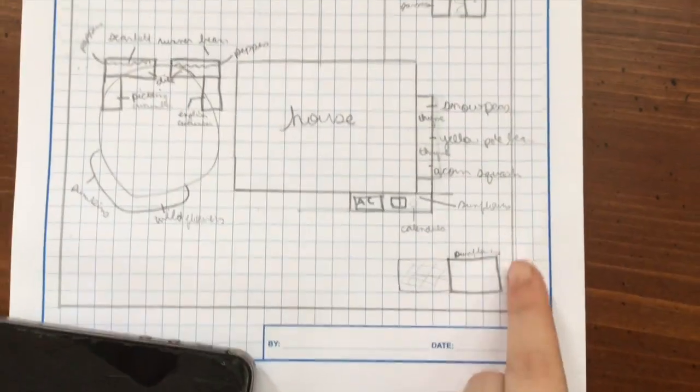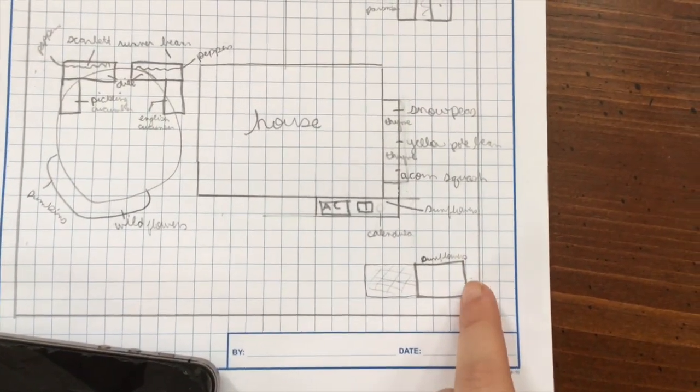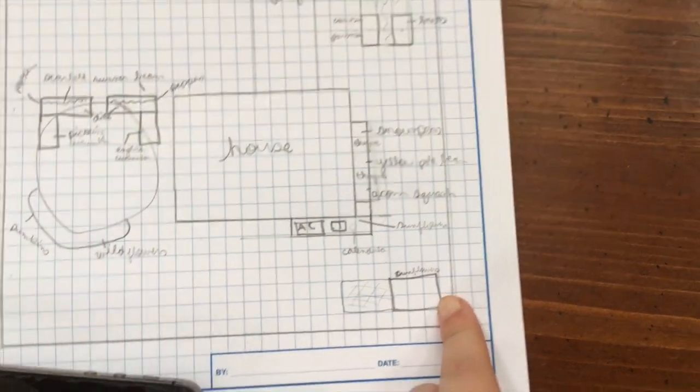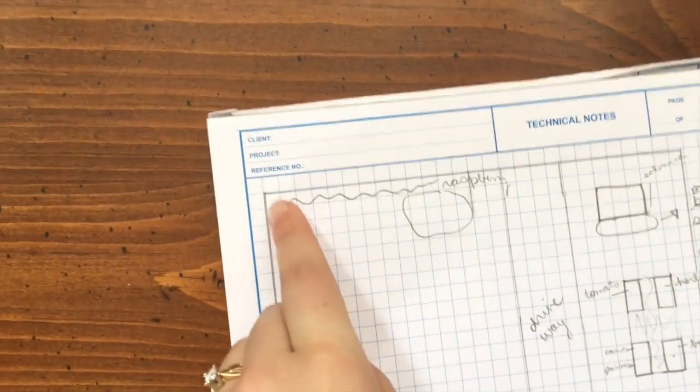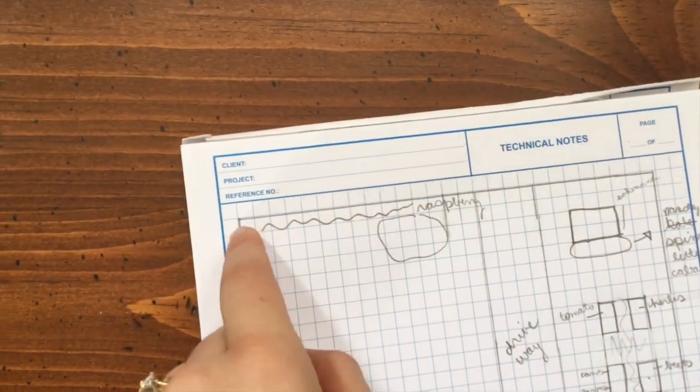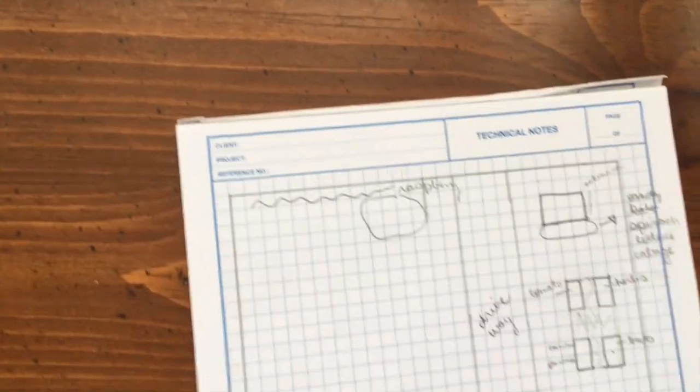We did have raspberries growing here on the back side of our chicken coop but they ended up taking over and I didn't like it there so I moved them. I transplanted some last year up here and I'll continue to do so this year.